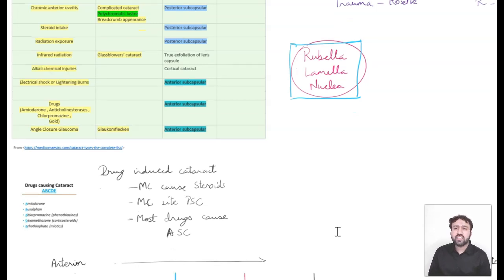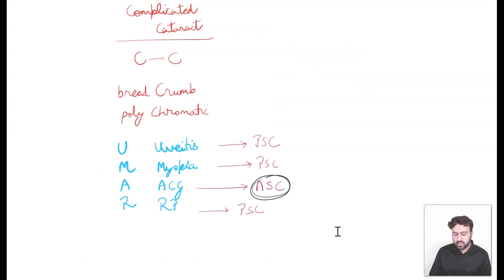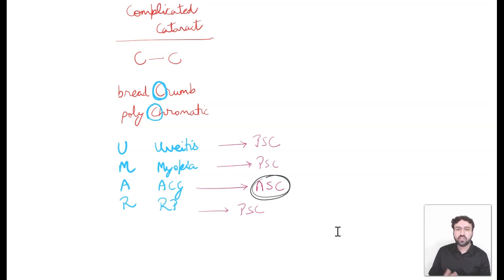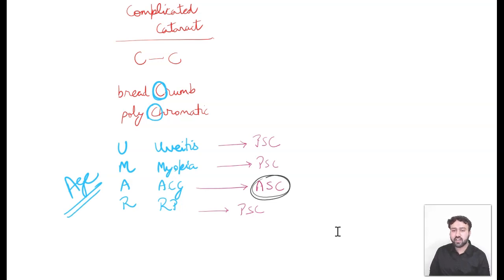In chronic anterior uveitis we see the complicated cataract, which has a polychromatic luster and the classical bread crumb appearance. I remember this using the mnemonic CC — Complicated Cataract with bread crumb appearance and polychromatic luster. Another mnemonic to remember causes of complicated cataract is UMAR, the Hindi word for age — standing for Uveitis, high Myopia, Angle closure glaucoma, and Retinitis pigmentosa. Note that angle closure glaucoma mostly causes anterior subcapsular opacities, whereas the other three cause posterior subcapsular cataract.